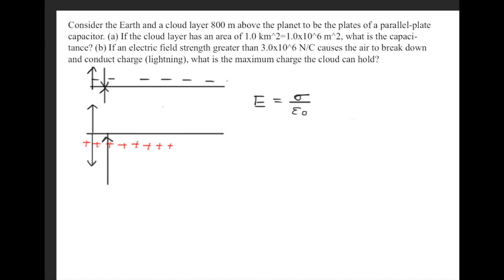We can go ahead and find an alternate formula for this. So we said that sigma is the charge density, so it's a charge per area. So we can go ahead and rewrite the E-field to be Q over the area times epsilon naught.